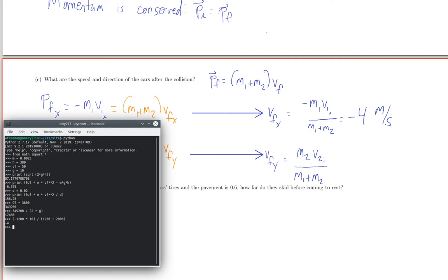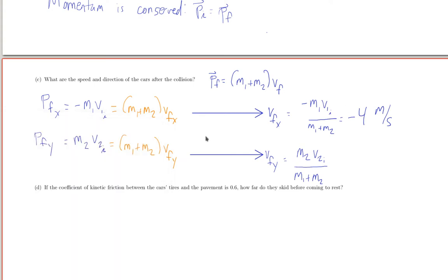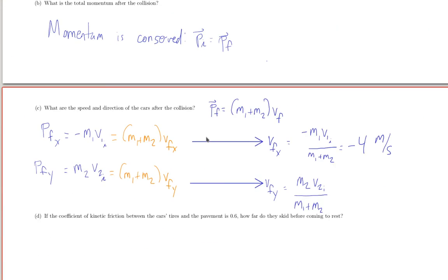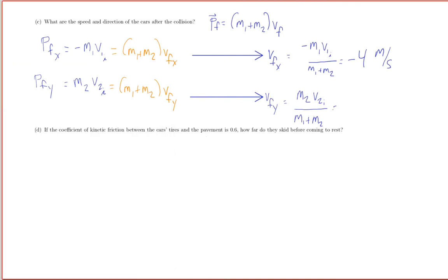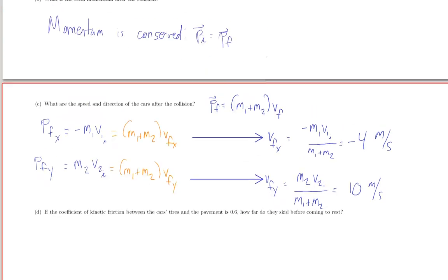So the final velocity in x winds up being minus 4 meters per second. Final velocity in y, going back to our Python interpreter, this car had a mass of 2,000 kilograms and was going 15 meters per second. That's plus 10 meters per second.